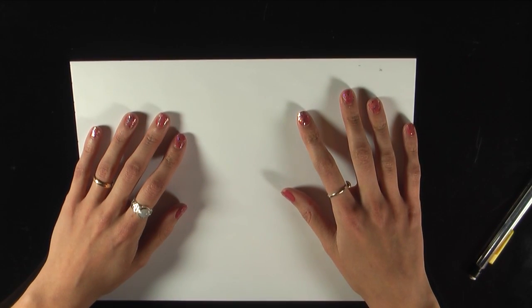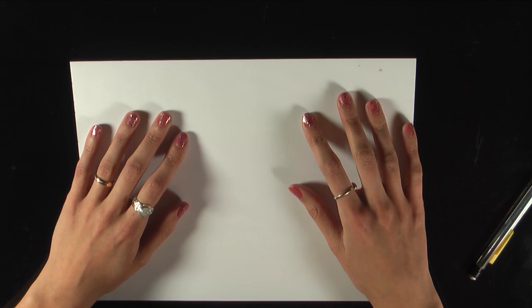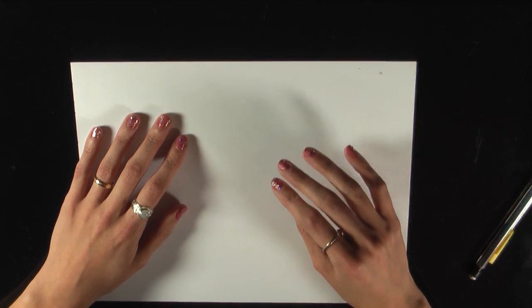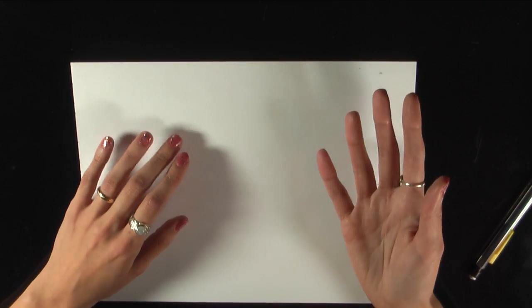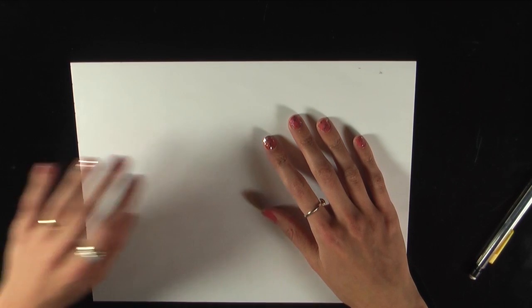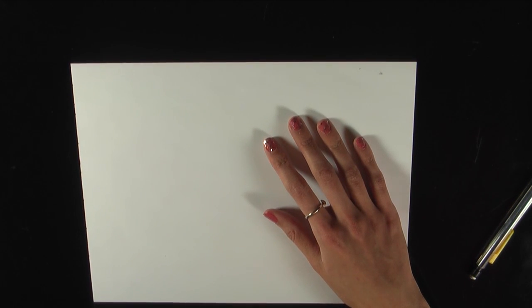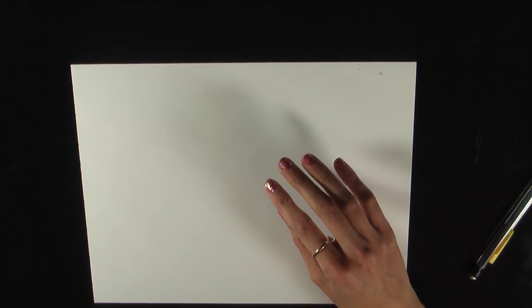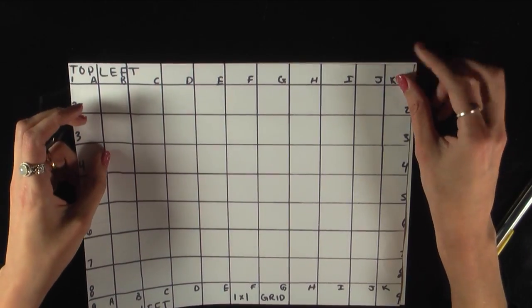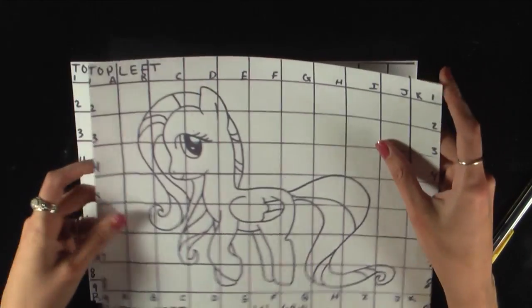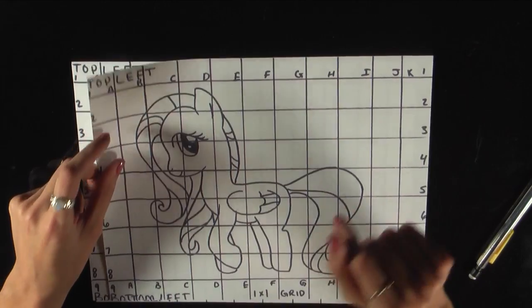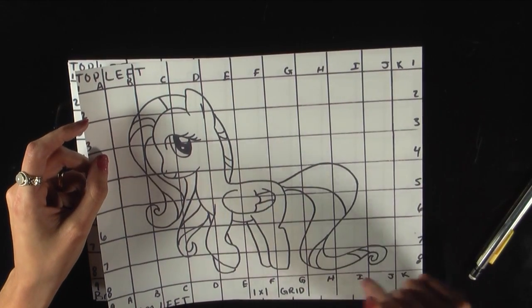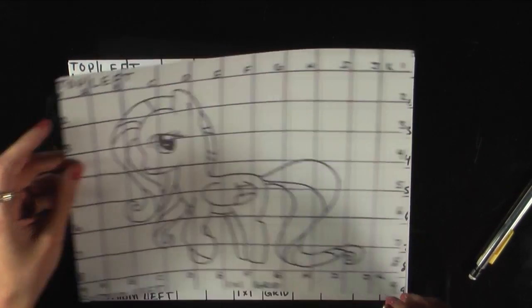Today we are drawing Fluttershy from My Little Pony and today's tutorial is actually going to be perfect for beginners or for those who are having trouble with proportions. I have made these printable guides for you and you can find these printable guides in the description of the video. You will notice that the guides are 8.5x11 1x1 grid and 8.5x11 1x1 grid with Fluttershy. This will be used for your reference whenever we are drawing Fluttershy on our grid.